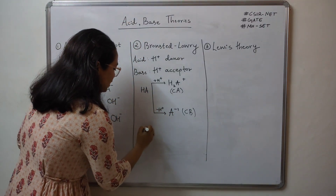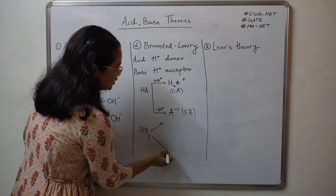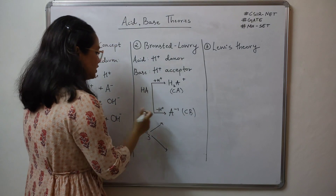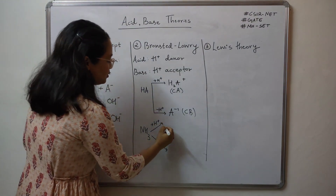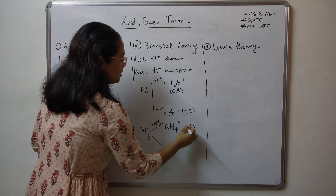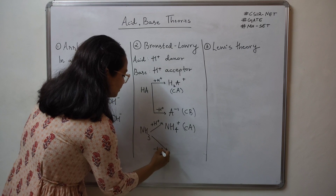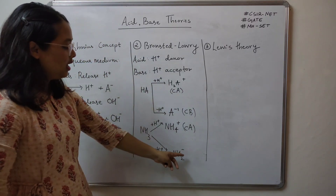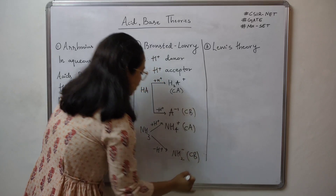We will apply this to ammonia, NH3. If I am adding H+, what will I get? NH4+. If I am adding H+, this is called the conjugate acid of ammonia. Now let us remove H+ — if I am removing H+, what will I get? NH2 minus, because I have removed a proton, so negative charge increases. NH2 minus will be the conjugate base of ammonia.